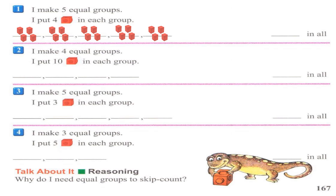Now I have made five equal groups, and each group contains four cubes. You can draw small cubes or you can write the number — write four, five times. Now let me use skip counting by four: four, eight, twelve, sixteen, twenty. We have twenty cubes in all!